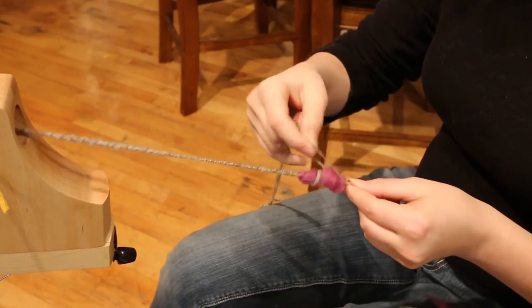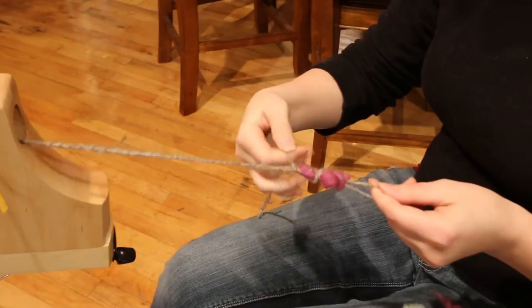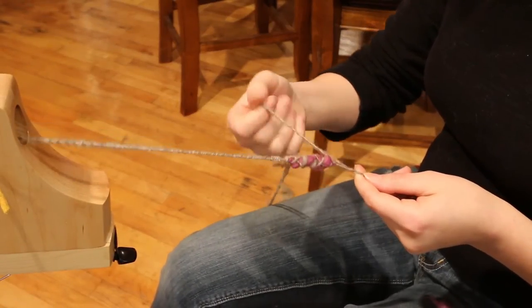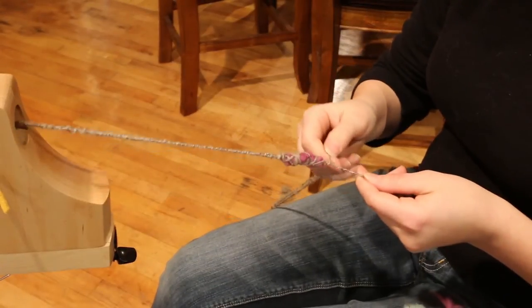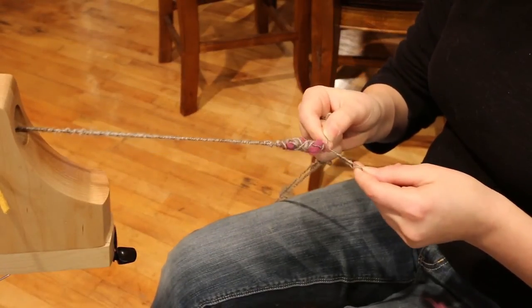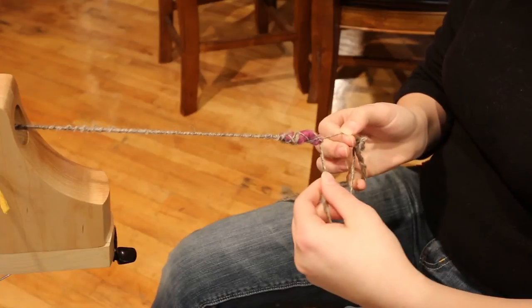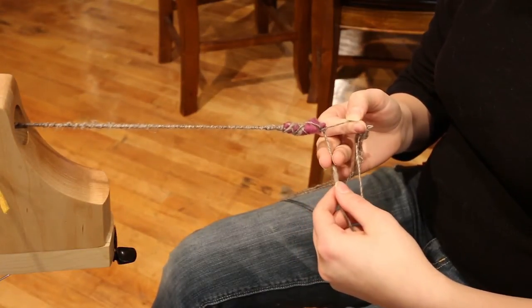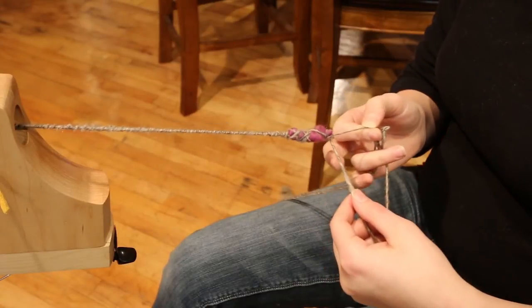Then you start treadling again and let your ply wrap around and go back and forth across it to catch the little bobble however many times you want. Then you have to lock it back and anchor it back in place again.